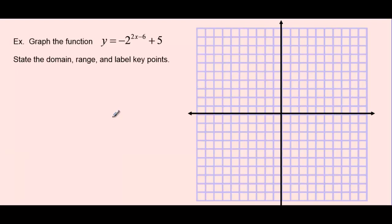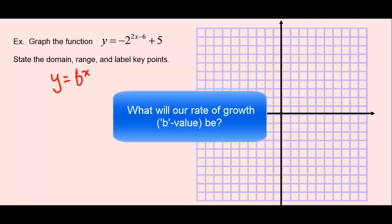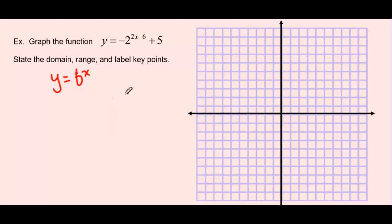To start our transformation, we're going to need to identify first our parent function. Remembering that our parent function for exponential functions is always in the form y equals b to the x, where b happens to be our rate of growth or our rate of decay. Can you recognize what our growth rate will be in this example? Figuring out which number in our equation is the rate of growth or the b value is very important, and in this case, the rate of growth happens to be 2.